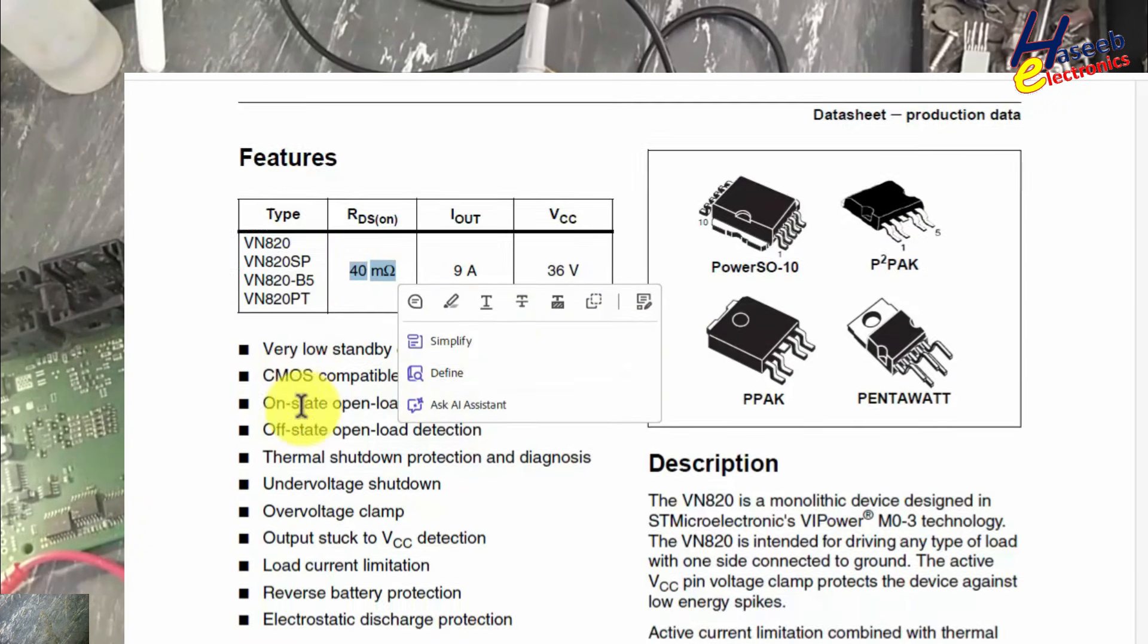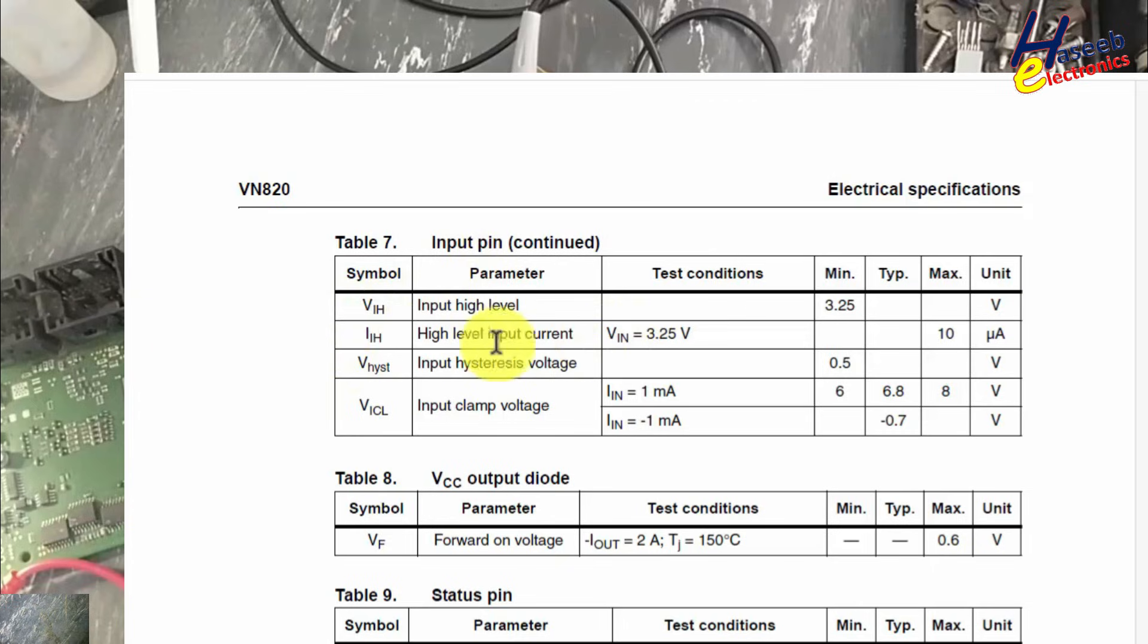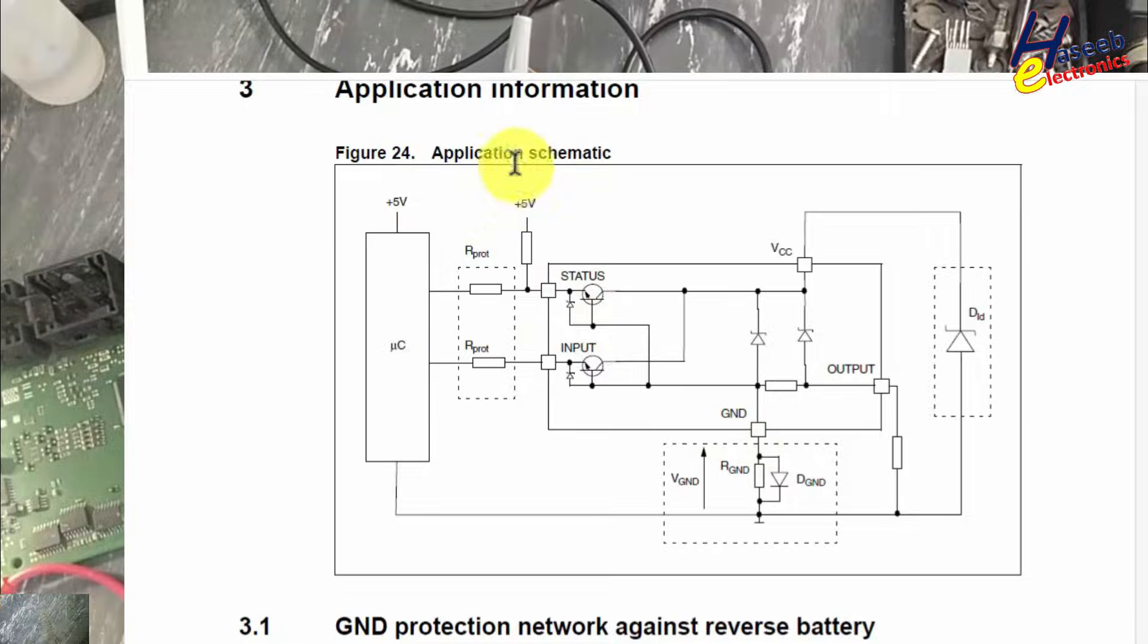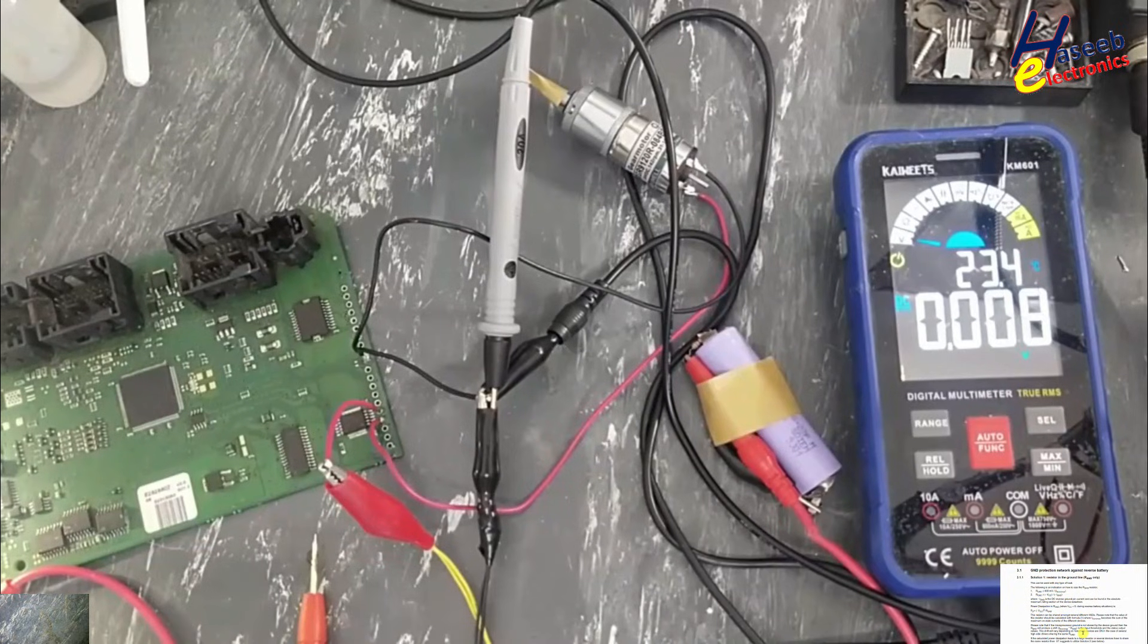RDS on is 40 milliohms. Input pin VIH, high input level minimum is 3.25 volts. Here is its typical application schematic. I hope this video is informative.